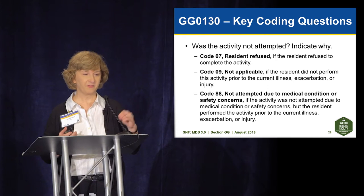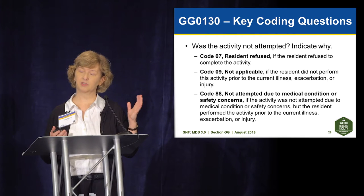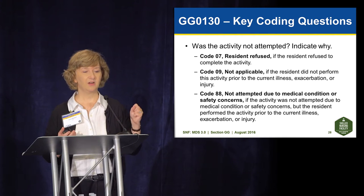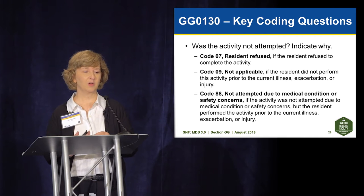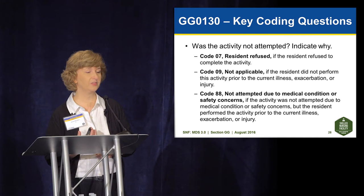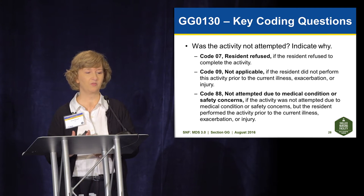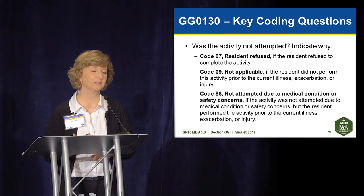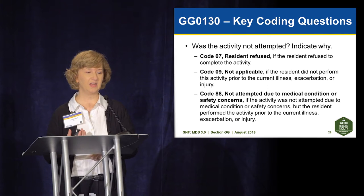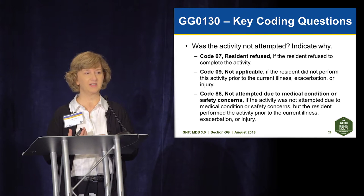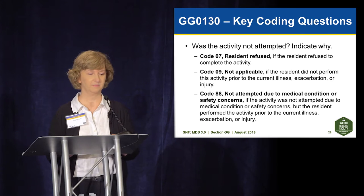If the person does not perform or cannot complete the activity, the codes are: 7 if the person refused, 9 if the person did not perform the activity prior to the current illness, exacerbation, or injury, or code 88 if the activity was not attempted due to the person's medical condition or safety concern.